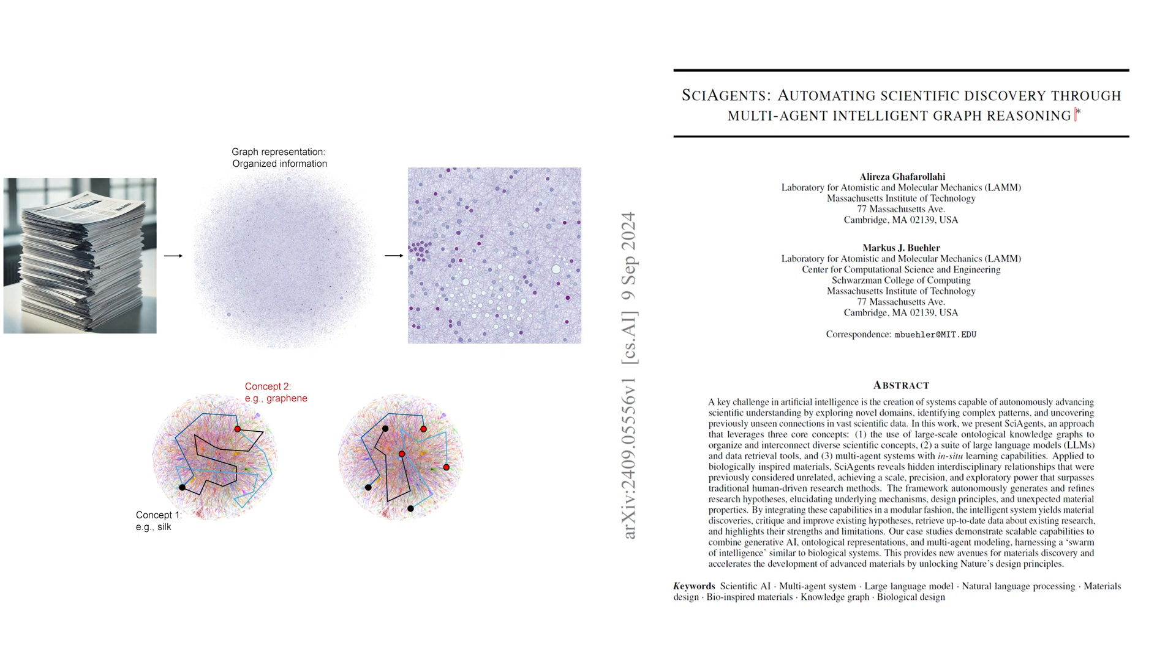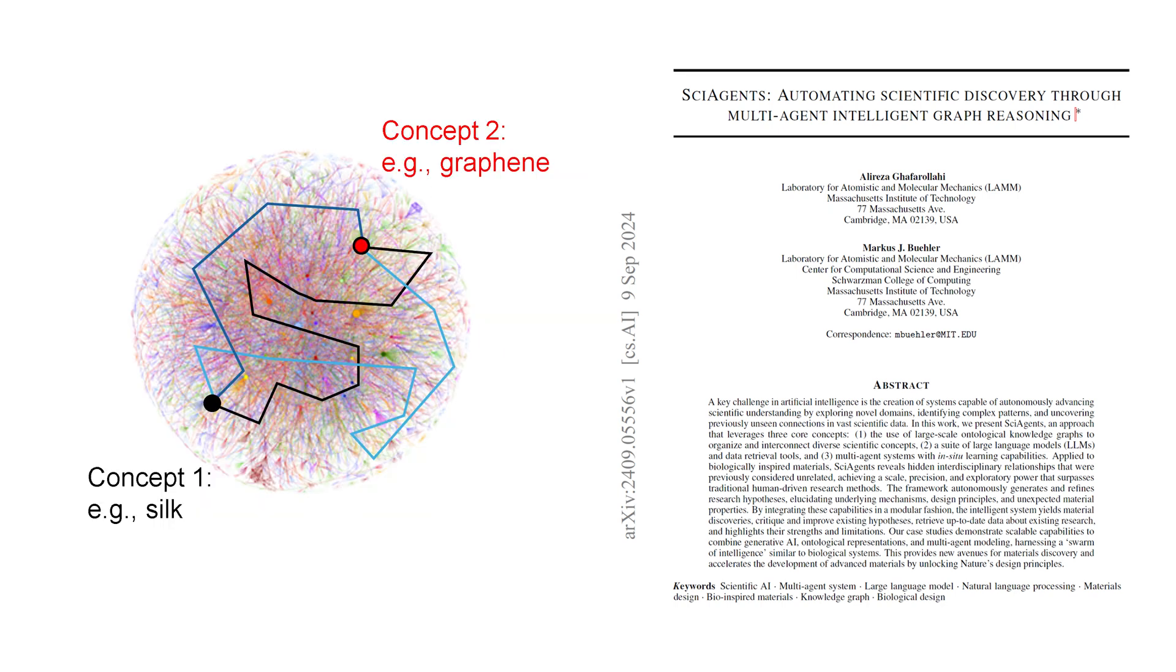It's like a web where nodes represent concepts and the connections between them represent relationships. So it's a way of organizing information so that a machine can understand the relationships between different pieces of data. Exactly. This allows AI systems to reason about the data, discovering new connections that might not be obvious to human researchers.